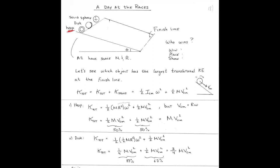A hoop is like a ring — take a ring off your finger, or it could be like an empty can with no ends on it. I have a disc, which could be like a roll of quarters, or a quarter. It's solid — a flat disc or a cylinder, they're the same. And this one's a solid sphere.